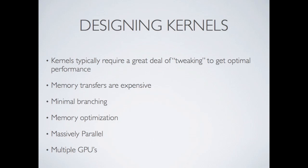When designing kernels, kernels are created using C code and typically require a great deal of tweaking to get optimal performance. Memory transfers are expensive, particularly writes to global memory. You want to minimize branching — if statements are typically a bad idea inside kernel code sent to the GPU. You have to deal with the fact that you are massively parallel with many threads that can all access the same areas of memory. You also need to handle multiple GPUs, since you must specifically execute your kernel on each GPU separately.